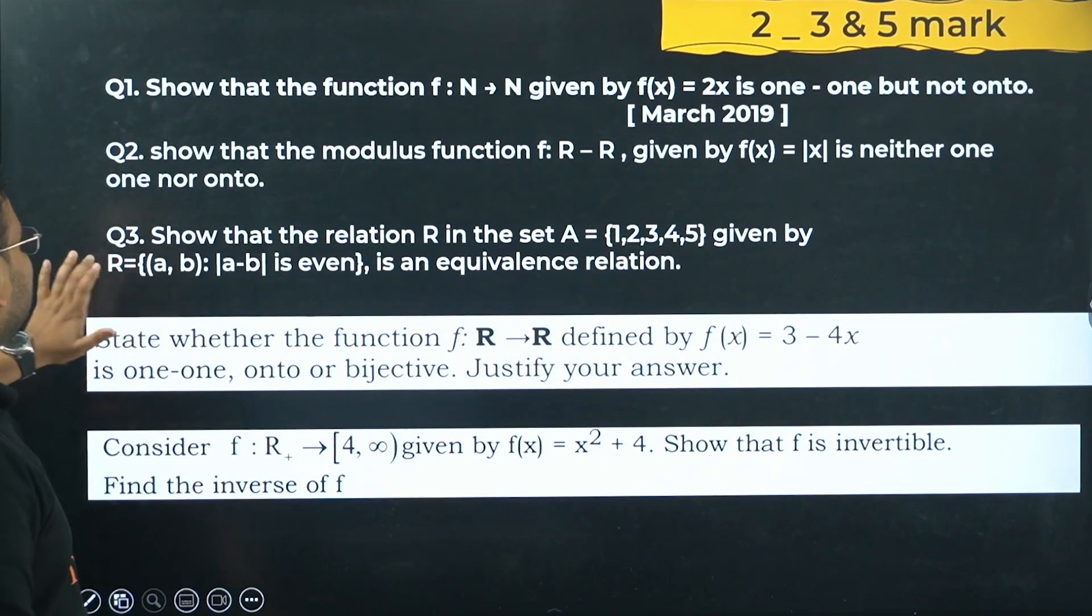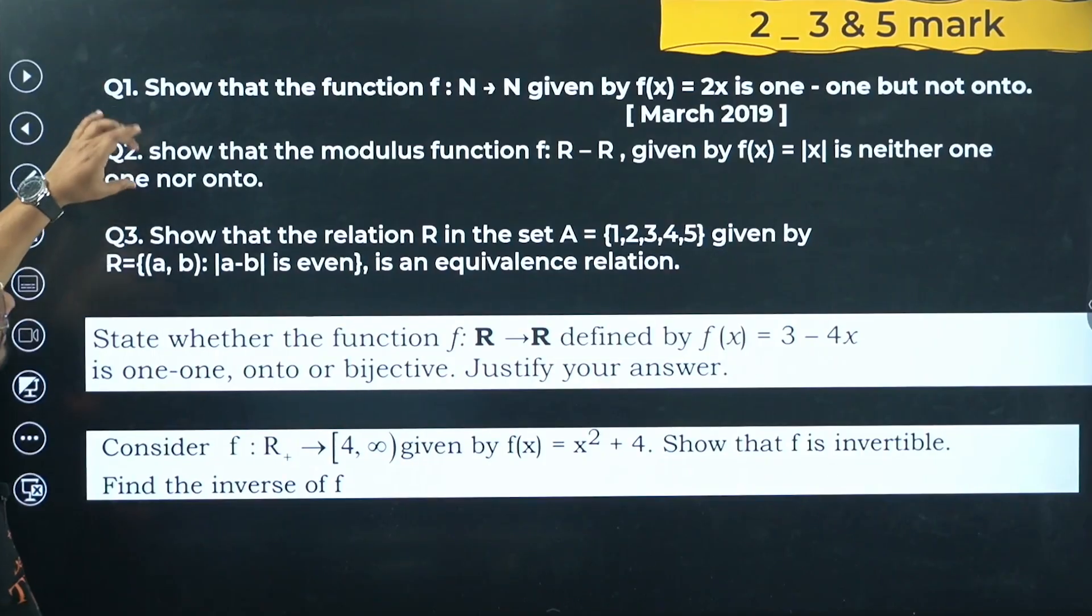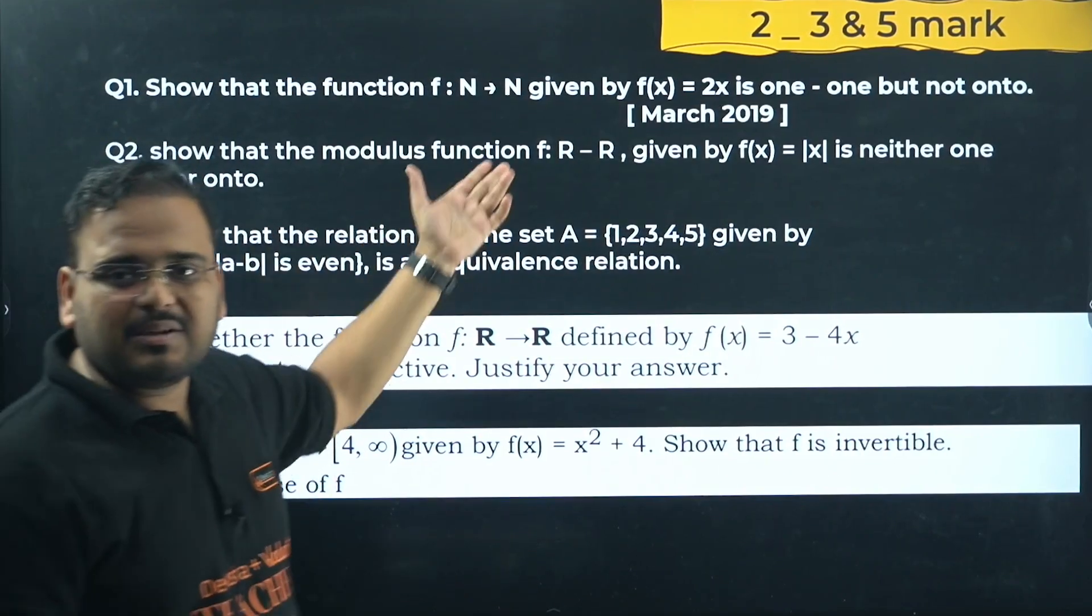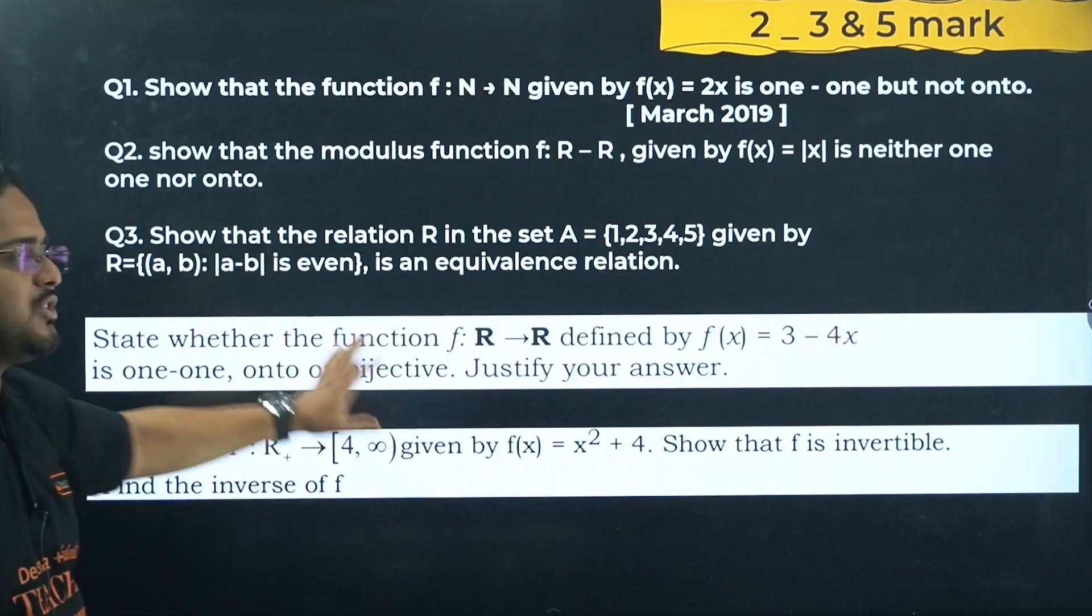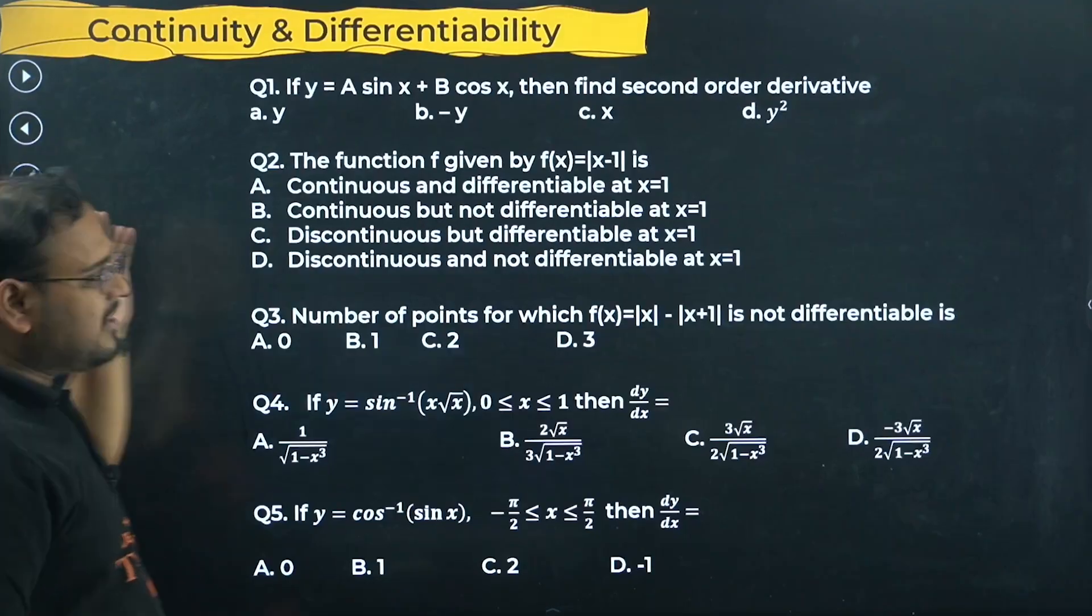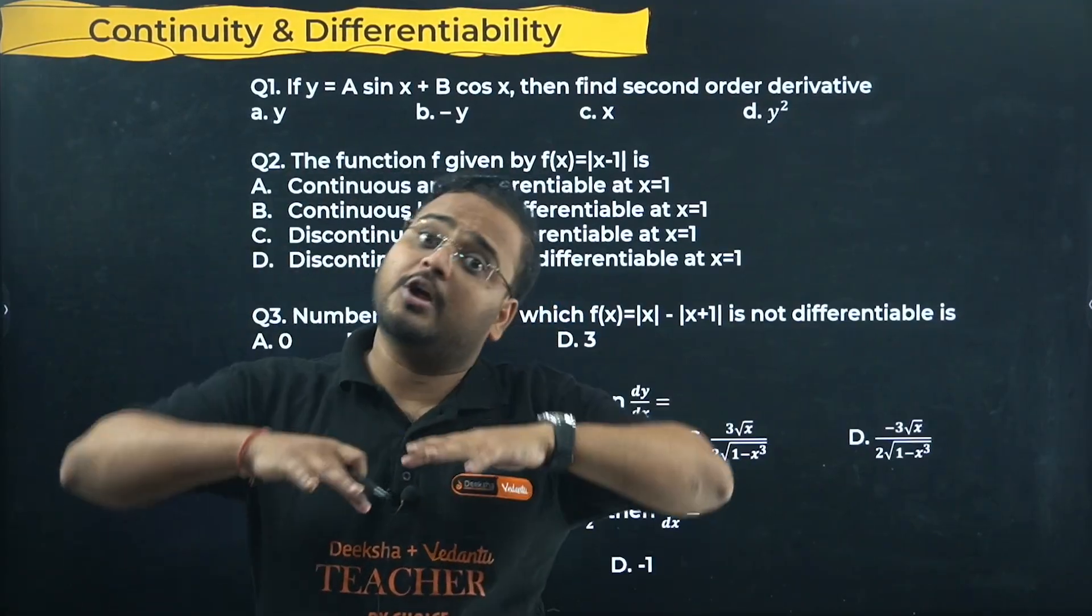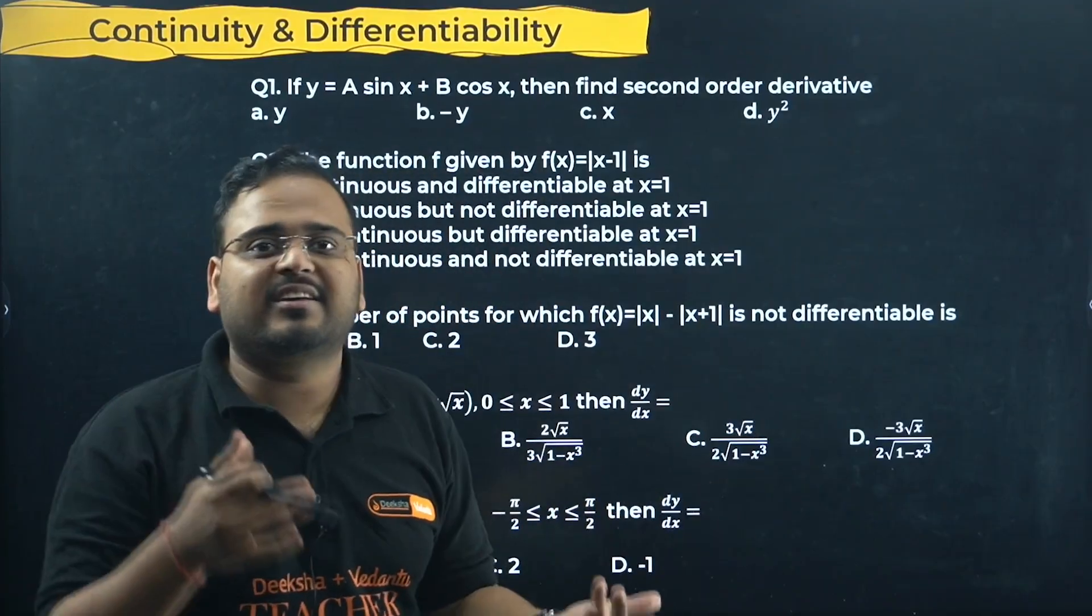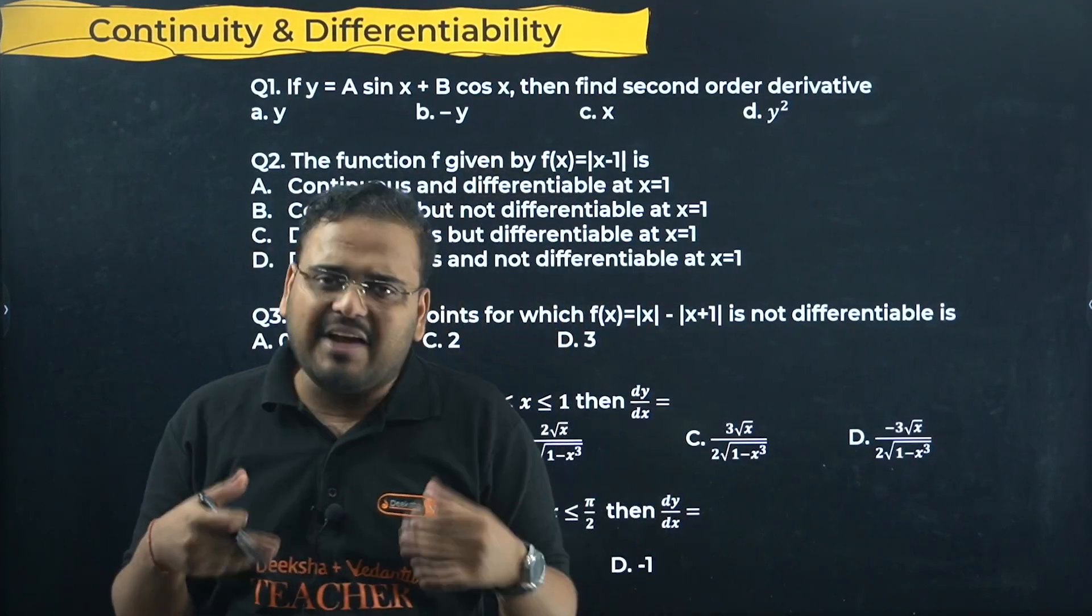At the same time, this is a three marker, this also is a three marker, and this is a two marker. This can be asked for two and three marks. This is a three marker and the last two are five markers. I've taken the minimum possible questions which can cover the entire chapter, not too many.